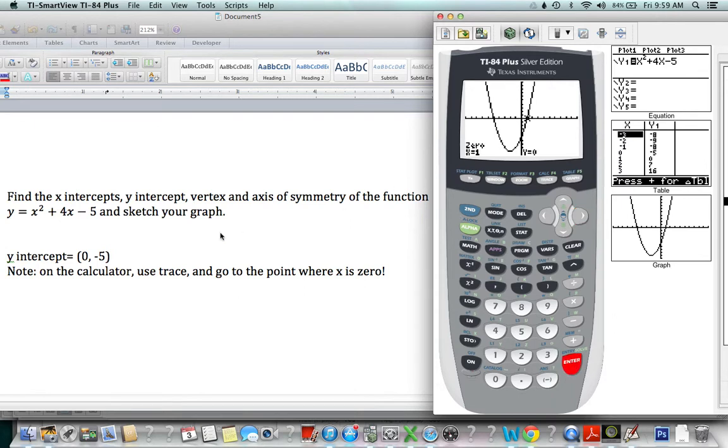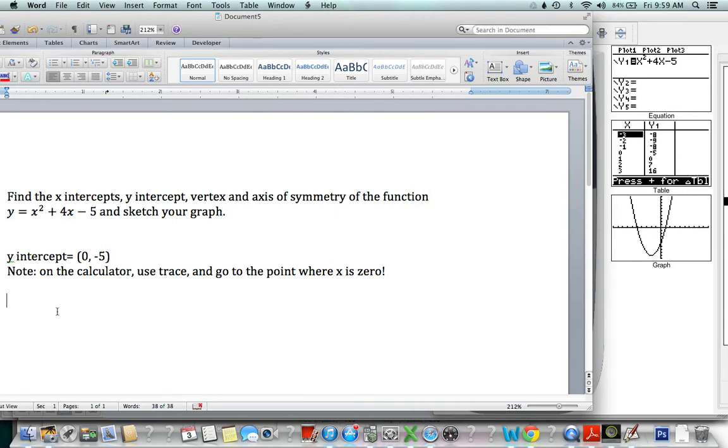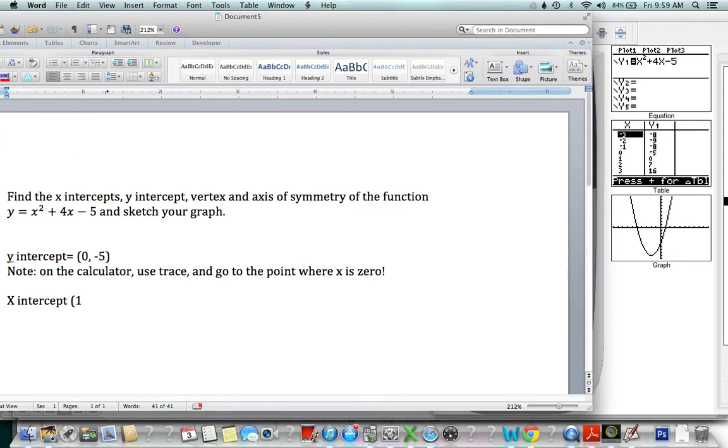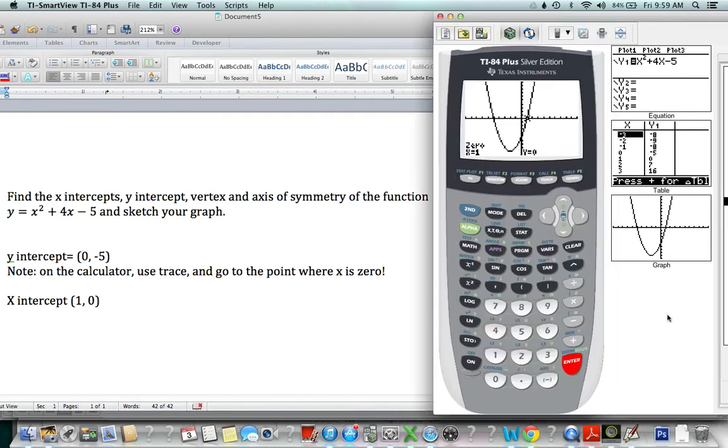And my x-intercept, one of them, is one. Let's look at that again. Yeah, it is one. One comma zero. But there is another x-intercept, and we have to do the same thing to find it.